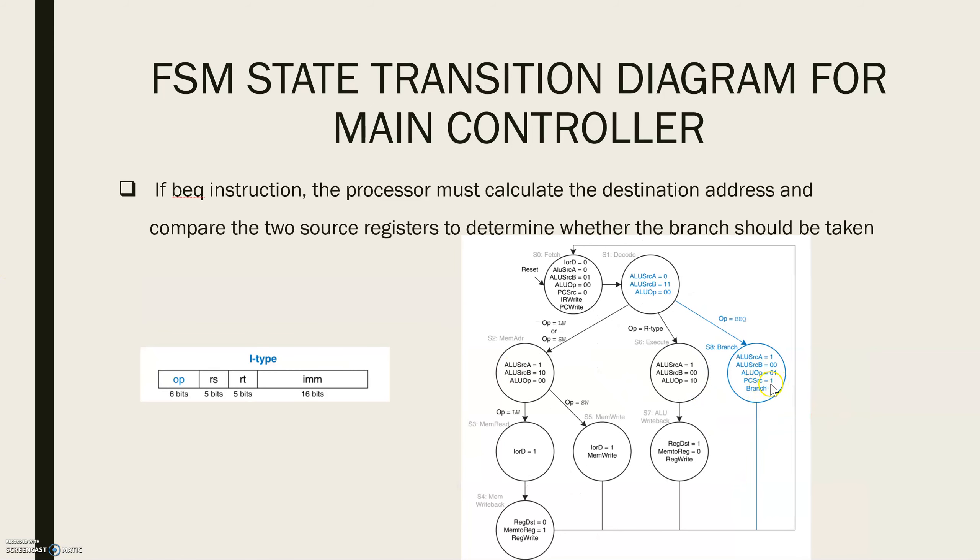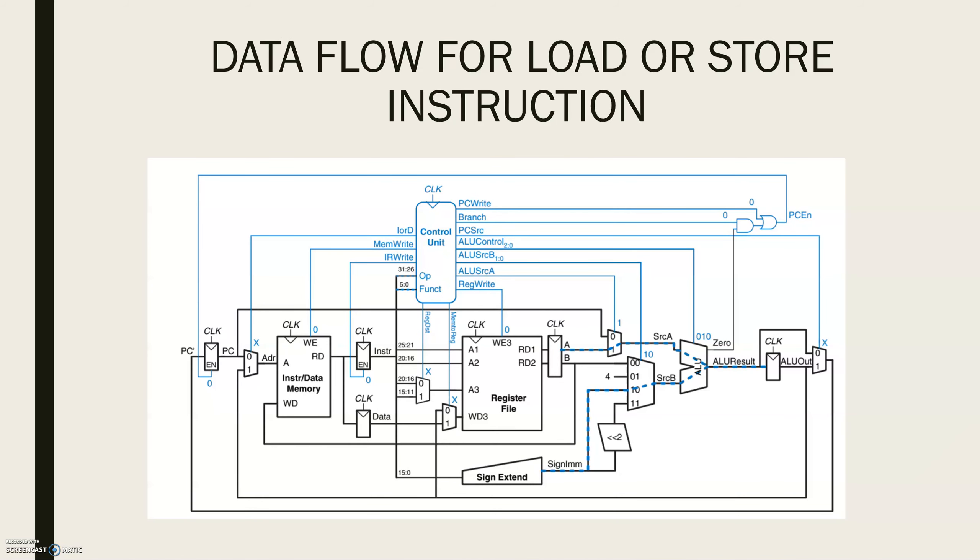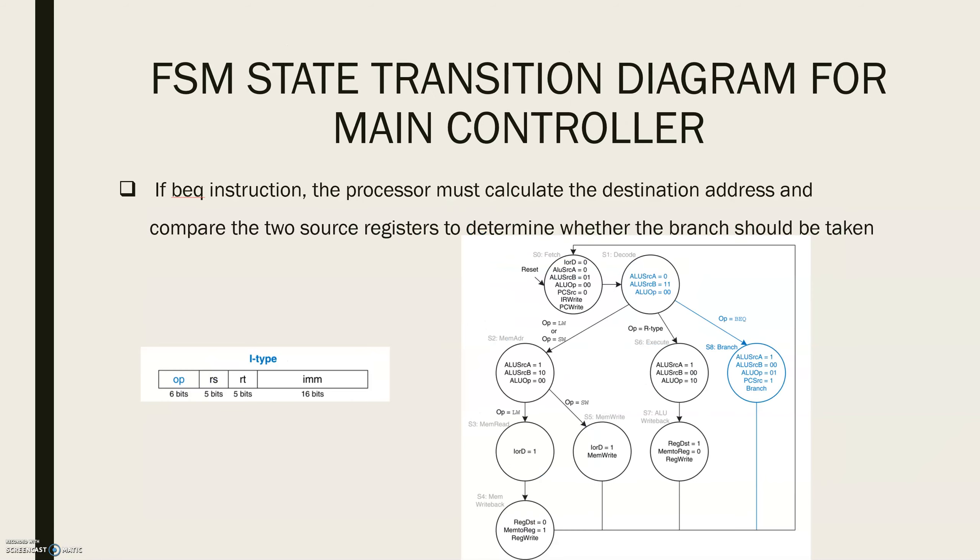PC SRC is 1 to take the destination address from ALU OUT. ALU SRC B is 0 and branch is asserted.